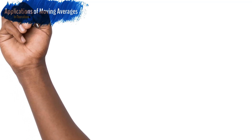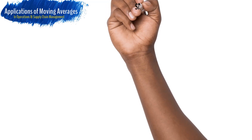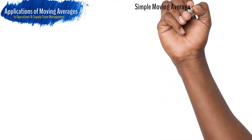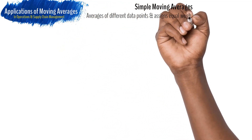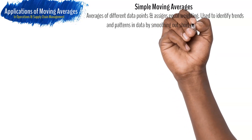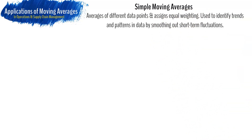Moving averages are versatile due to their applicability in various fields, including finance, economics, and operations, for trend analysis and forecasting. In this video, we will apply moving averages to forecasting in the context of operations and supply chain management. With the aid of an example, we will identify the two main types of moving averages. The first type is called simple moving average, which is calculated by taking the average of a set of data points over fixed periods. This method assigns equal weight to each data point or period in the calculation.